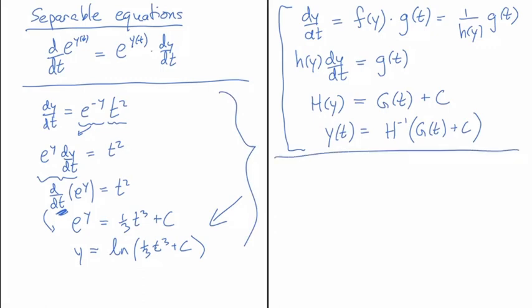Let me do an example. The equation is y prime equals minus x over y. Notice I've switched variables — the prime is a derivative with respect to x, since that's the only other variable. This is already separable. I rewrite it as y times y prime equals minus x. Going backwards through the chain rule, I get one-half y squared equals minus one-half x squared plus c.